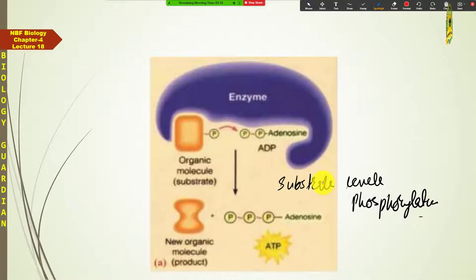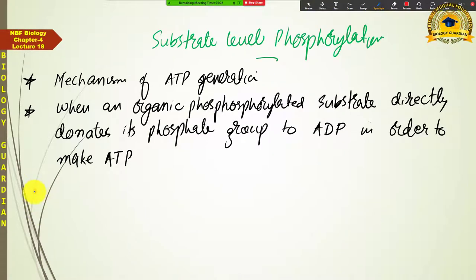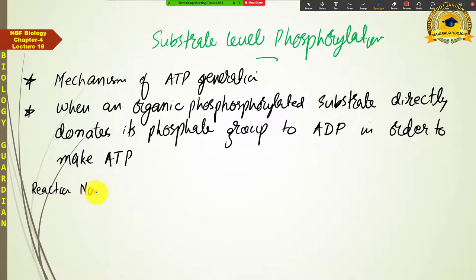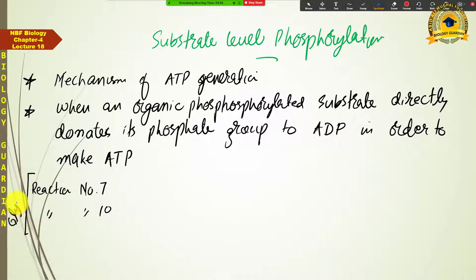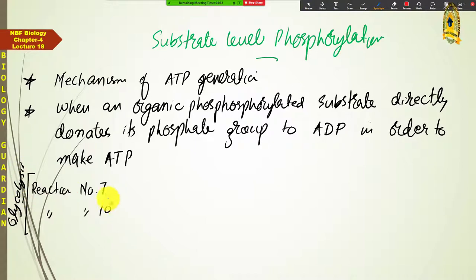Substrate level phosphorylation occurs at three different occasions through the aerobic respiratory pathway. One example we can give is glycolysis reaction number 7, and another is glycolysis reaction number 10. Both are examples of substrate level phosphorylation in glycolysis.